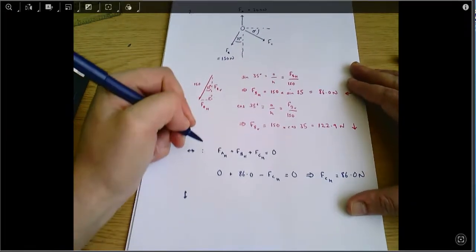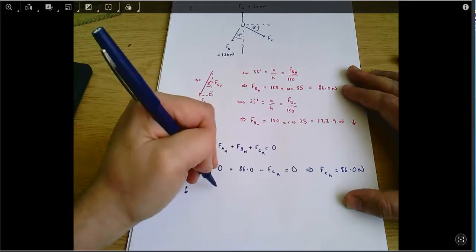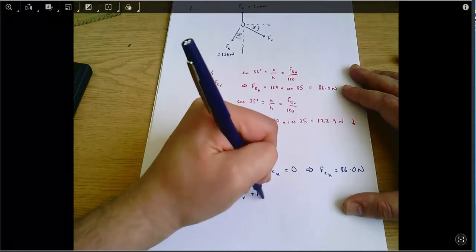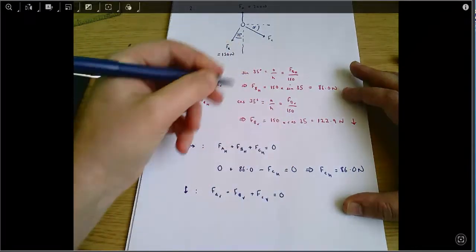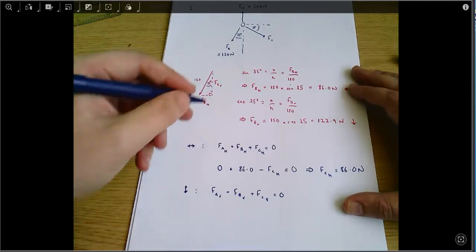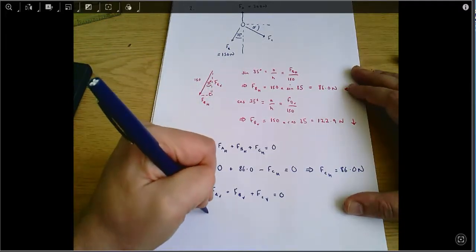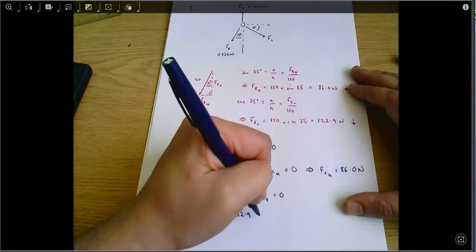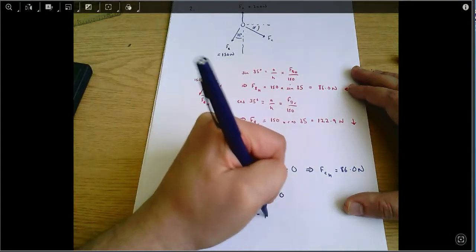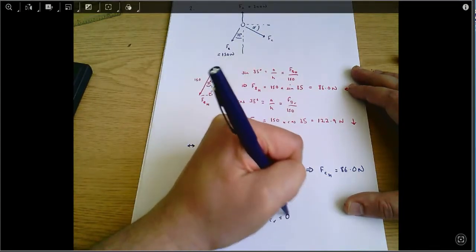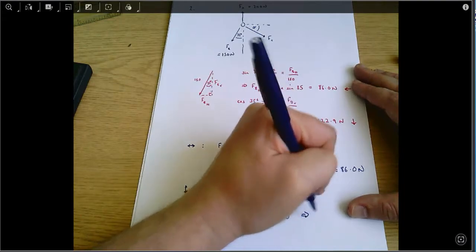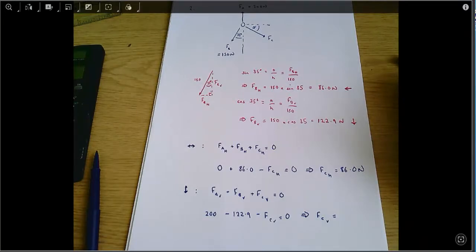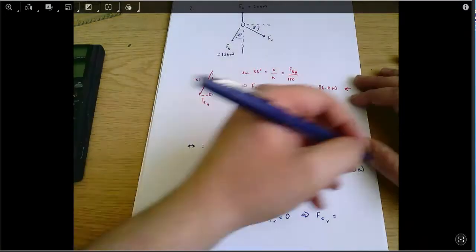Doing vertical equilibrium, I can say FAV plus FBV plus FCV equals zero. I'm going to make forces acting up positive and down negative. So it's 200 minus 122.9. This is acting down, so I'm going to put it in as minus FCV equals zero. And when I rearrange that, I'll get FCV equals 200 minus 122.9, which equals 77.1.